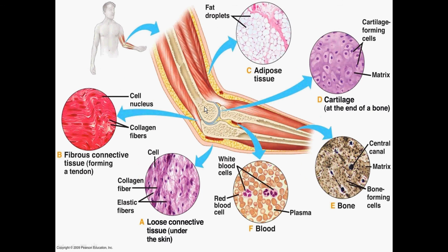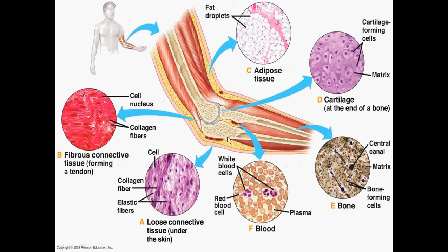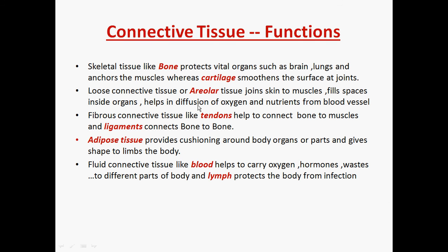Cartilage smooths the joints between two bones, as you can see in this figure — this is a skeletal connective tissue. Bones also anchor the muscles and serve as storage sites for calcium and phosphates. Secondly, the loose connective tissue — the areolar tissue — joins skin to muscles and fills spaces inside organs. This figure shows the skin and muscles, with the space between them filled by the loose connective tissue, which is the areolar tissue.